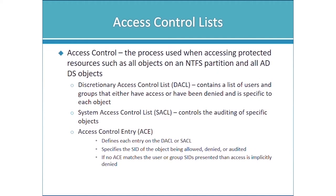In both the DACL and SACL, individual entries are called Access Control Entries, or ACEs. Each ACE specifies the SID of a single object — user, group, or computer — whether the permission is being allowed, denied, or audited, and the actual permission. If there isn't an ACE that matches the user or group, access is implicitly denied. Think of it like trying to get into a private charity dinner — you validate who you are, but you also have to be on the list. If you're not on the list, you don't get in.